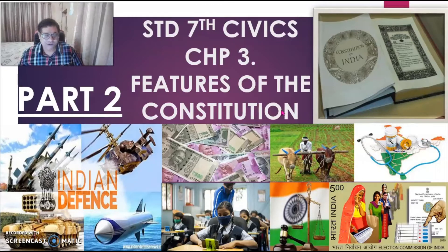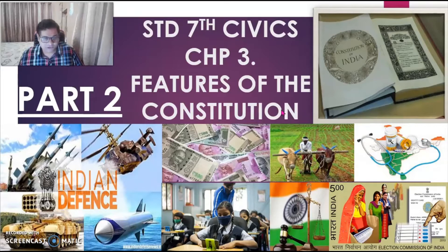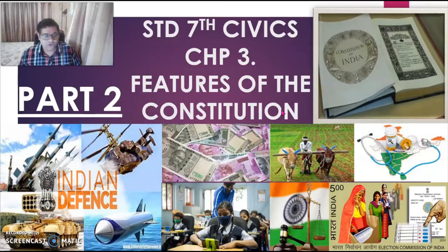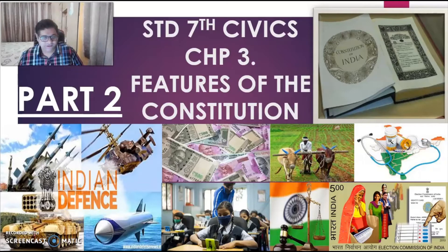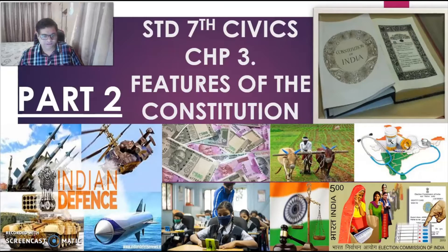In the first part of the lesson, we had learnt about Federalism, Separation of Powers, and 3 lists: the Union list, State list, and Concurrent list. Then we learnt about the Union Government subjects, State Government subjects, and both the Government subjects.